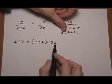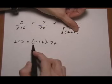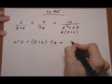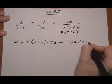Z by itself is already here. Z plus 6 binomial is already here. So this will be our LCD right here: 7Z times Z plus 6.